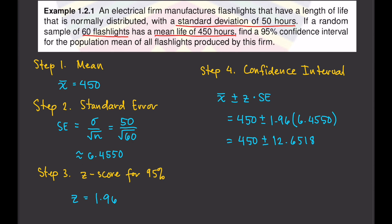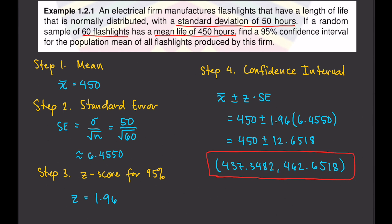Writing that in interval notation: the lower bound is 450 minus 12.6518, which is 437.3482, and the upper bound is 450 plus 12.6518, which is 462.6518. So we are 95% confident that the average life of flashlights this electrical firm manufactures is between 437.35 hours and 462.65 hours.